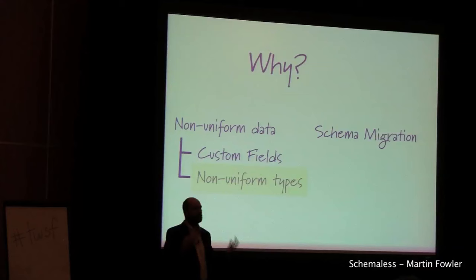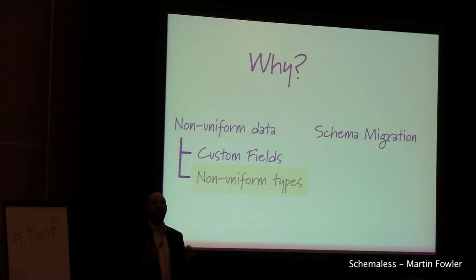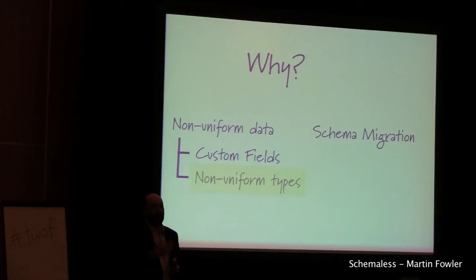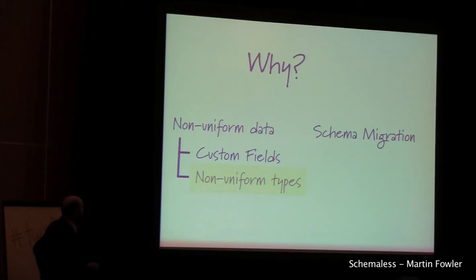Another example is when the data types themselves are very non-uniform, such as event data, where different events carry all sorts of different data. If you've got a very rich and powerful predicate schema language you might handle that quite well, but in a lot of cases the schema language available is just not up to the job — a relational database schema is very poor at handling very non-uniform data types. So in that situation you might reluctantly go with a schemaless approach.